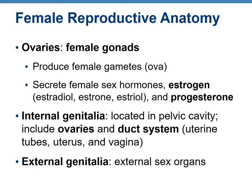Organs of the female reproductive system include female gonads, which are the ovaries. Their functions are to produce female gametes called ova, and to secrete female sex hormones estrogen and progesterone. Organs also include external genitalia, which we will cover in the second part, and internal genitalia located in the pelvic cavity, including ovaries and a duct system such as uterine tubes, uterus, and vagina.